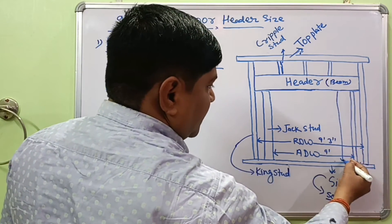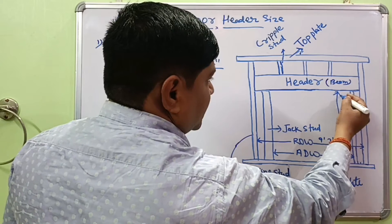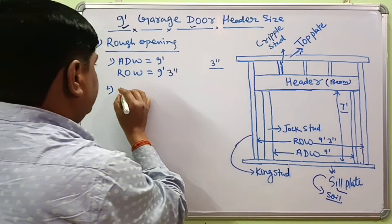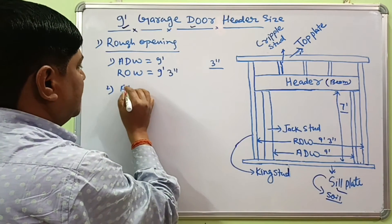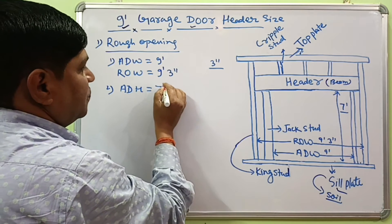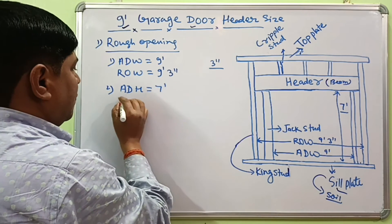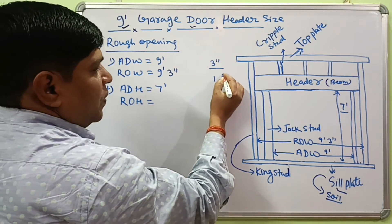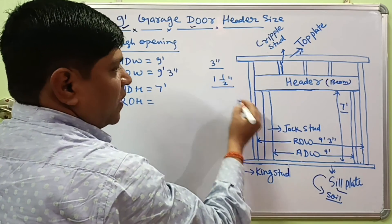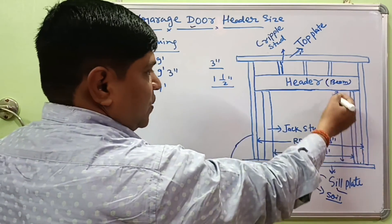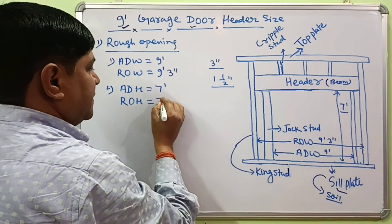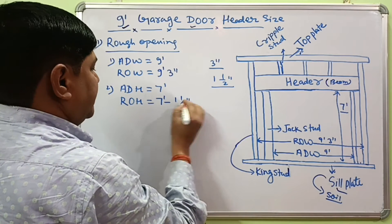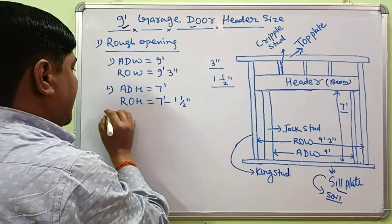Now we find the height of the door. The actual door height is about 7 foot tall. The rough opening height is about 1.5 inches taller than the actual door height, so the rough opening height will be 7 foot 1.5 inches.